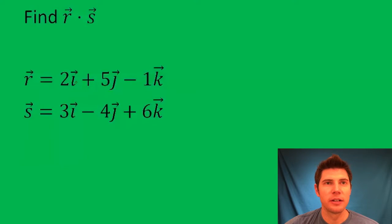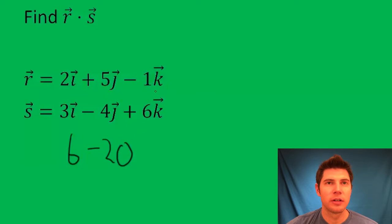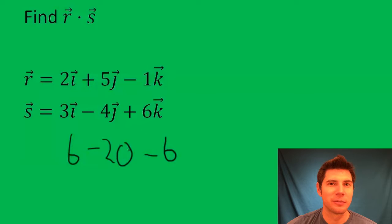The way you do that is it's just this times this: 6, this times this: minus 20, this times this: minus 6. So 6 minus 20 is negative 14, minus 6 is negative 20.